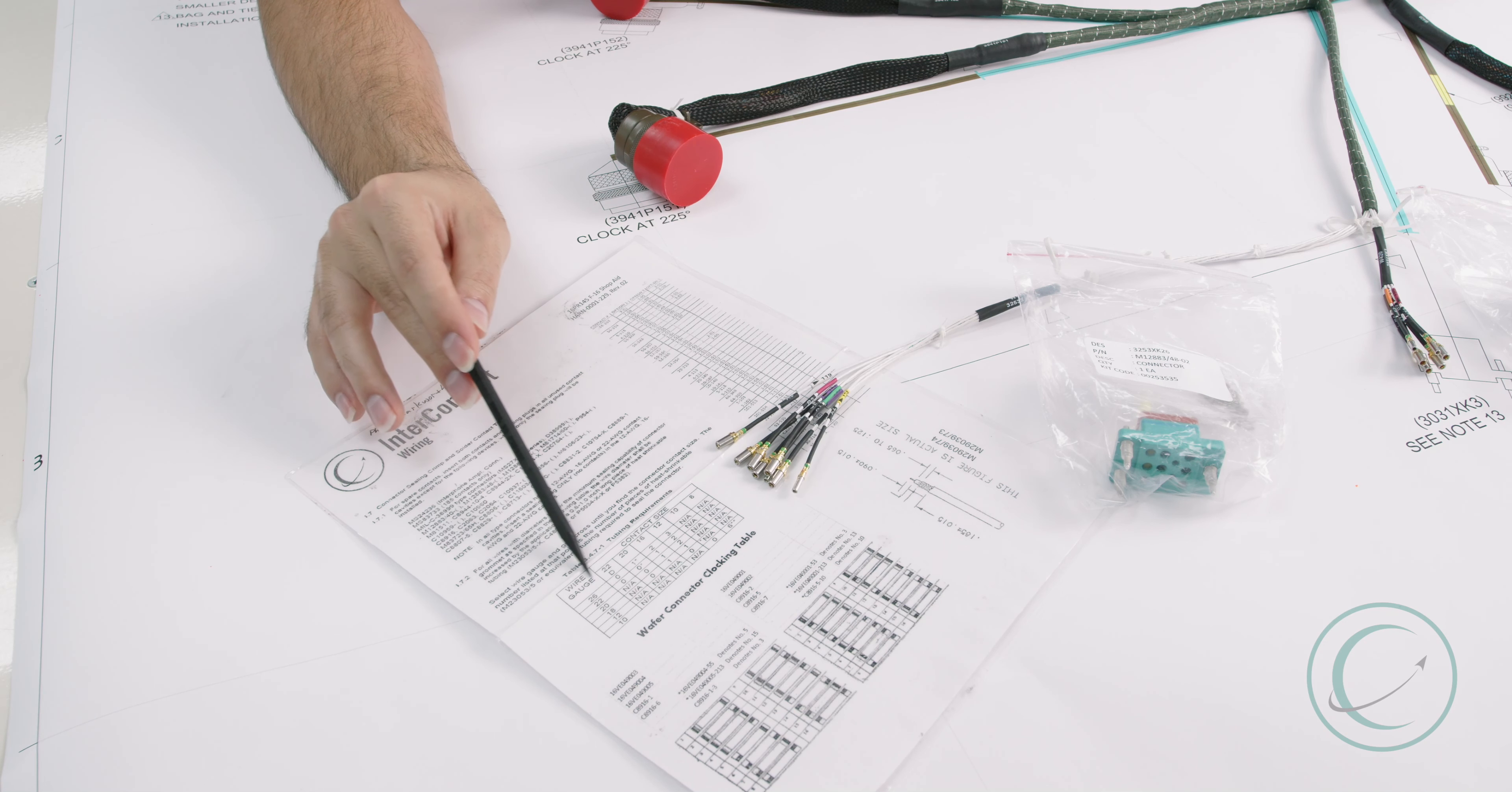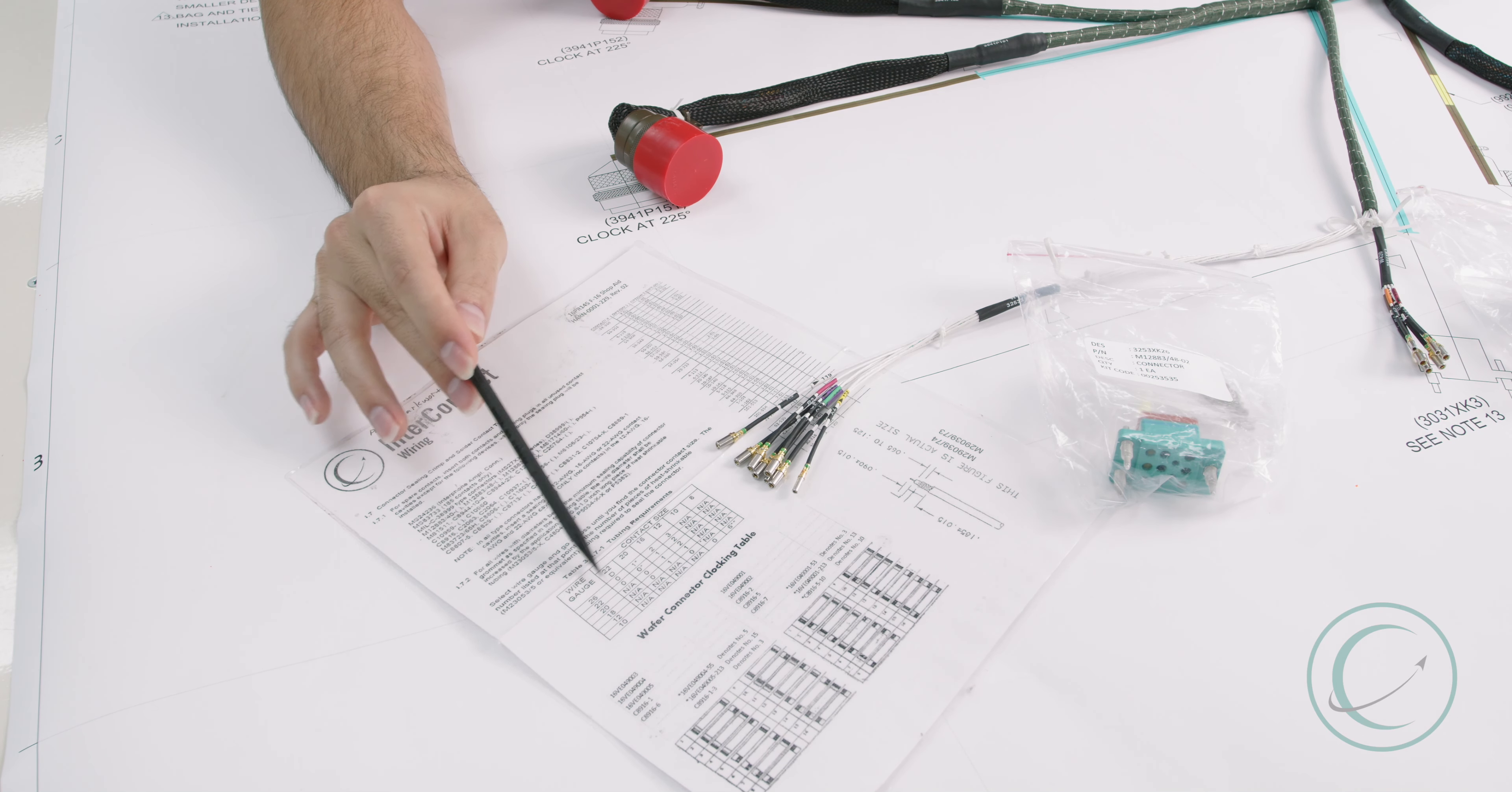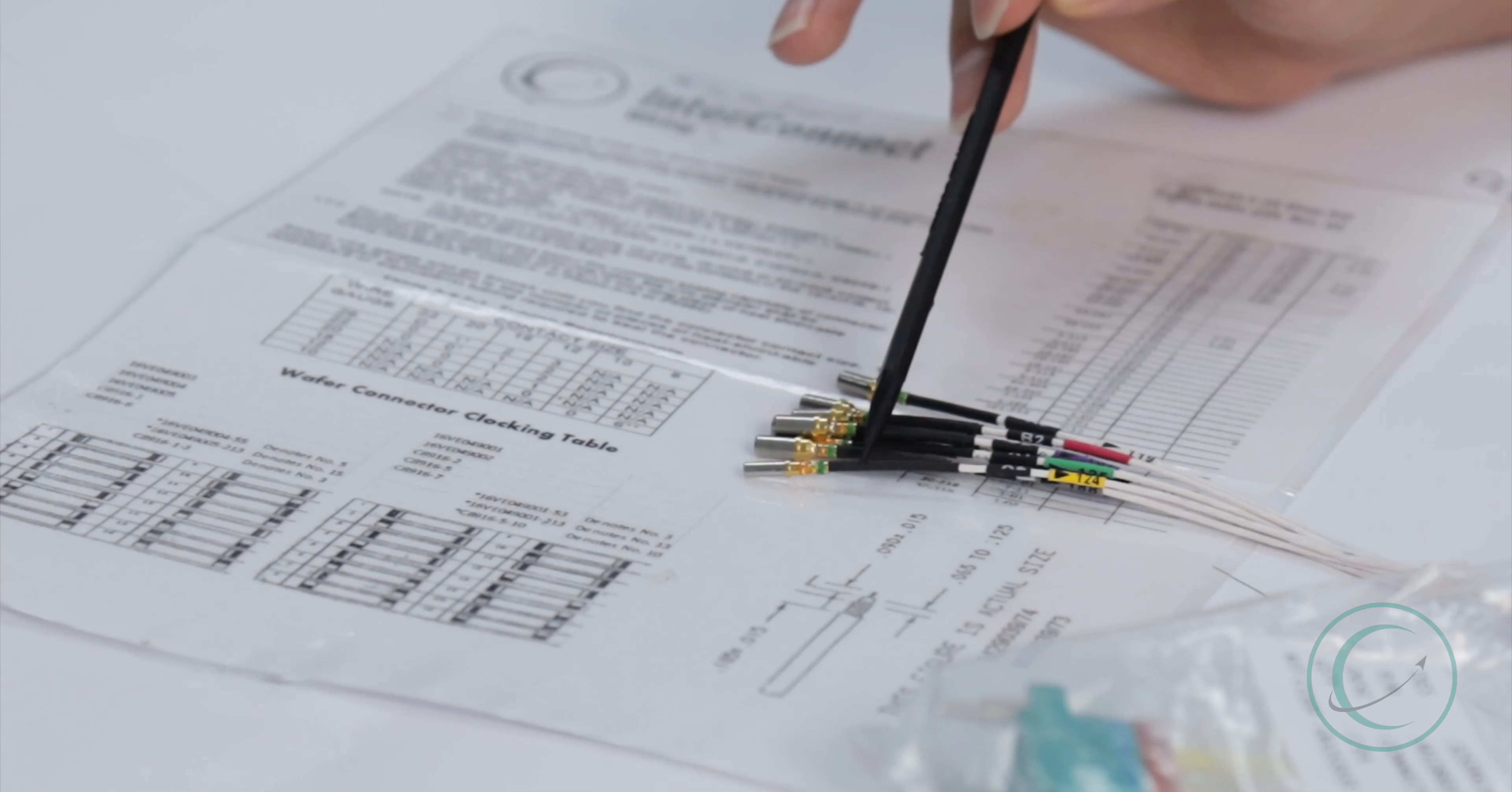Our assemblers know how to do this based off of this chart right here. If the contact size falls under a certain amount with the wire gauge, they line that up and it shows that one would be required.